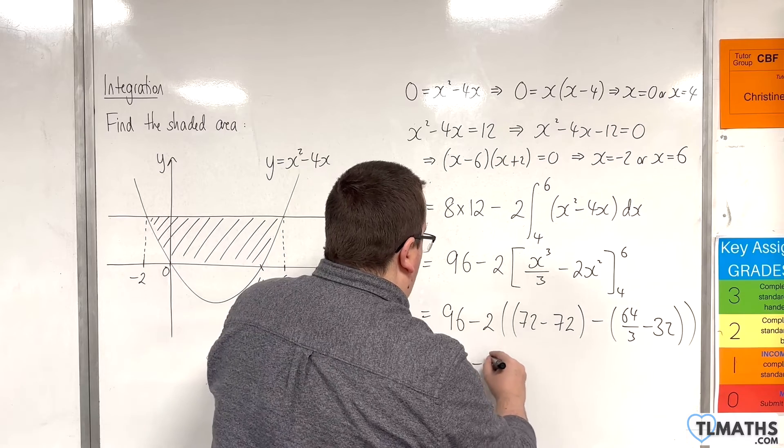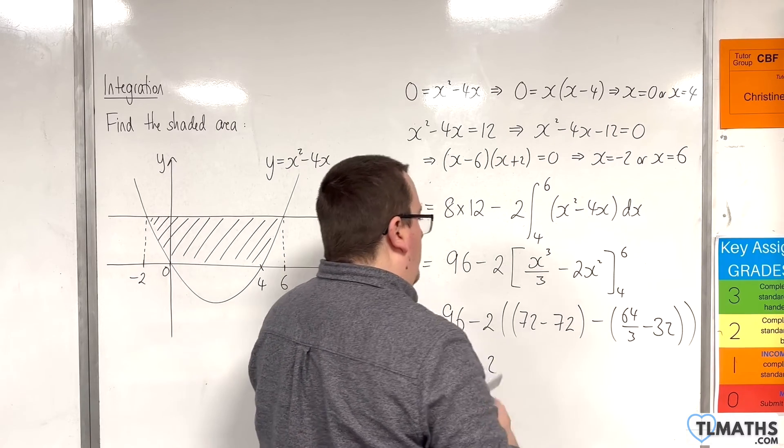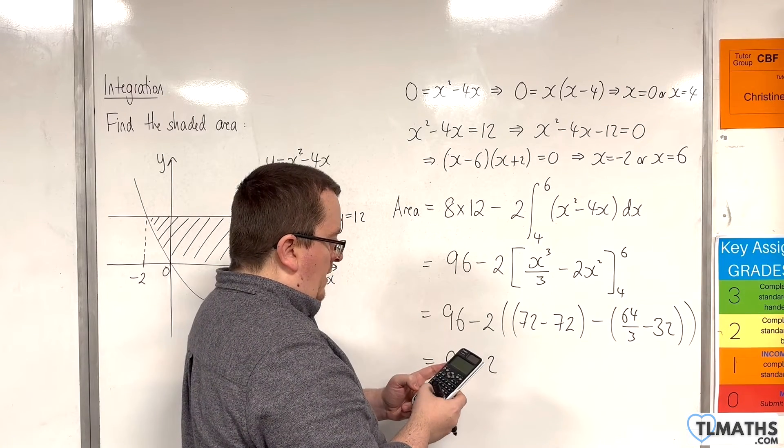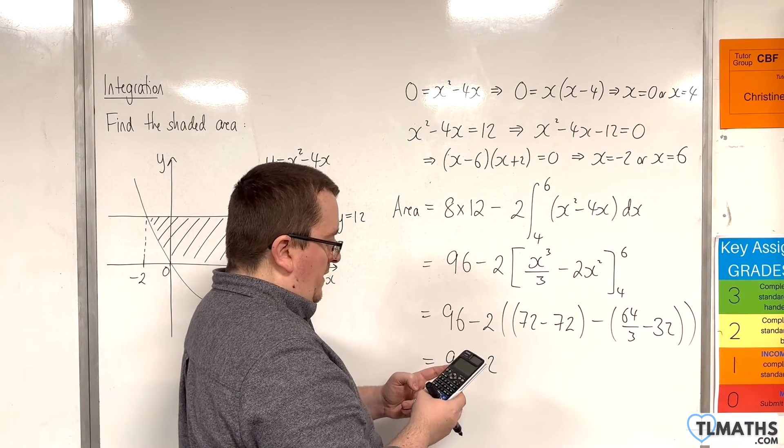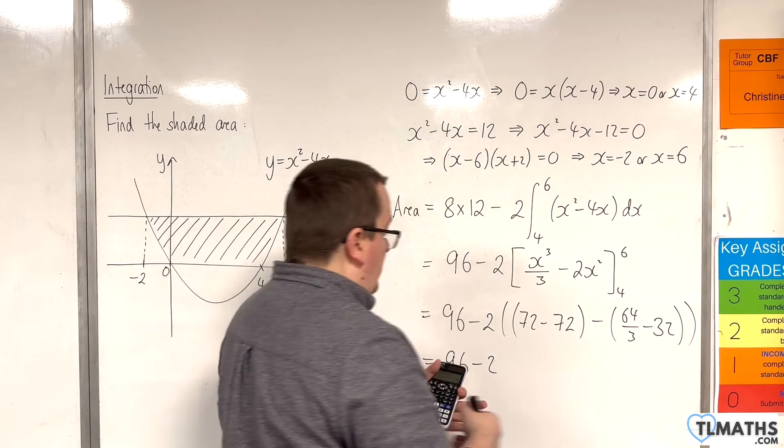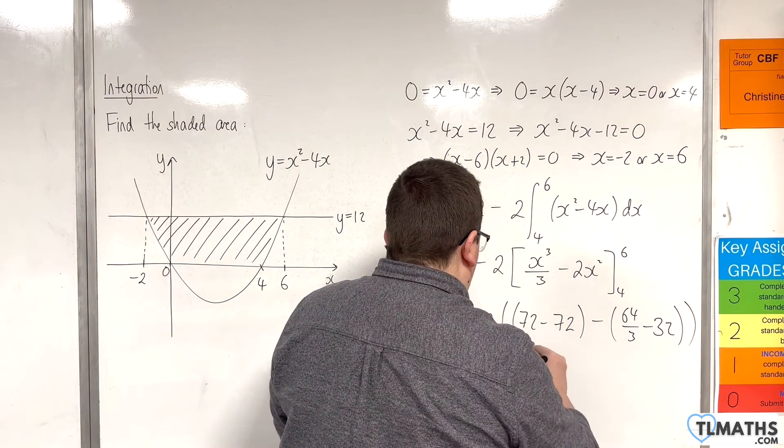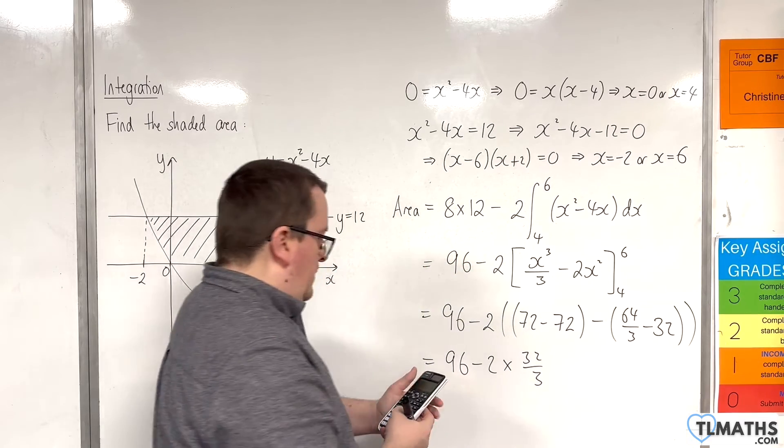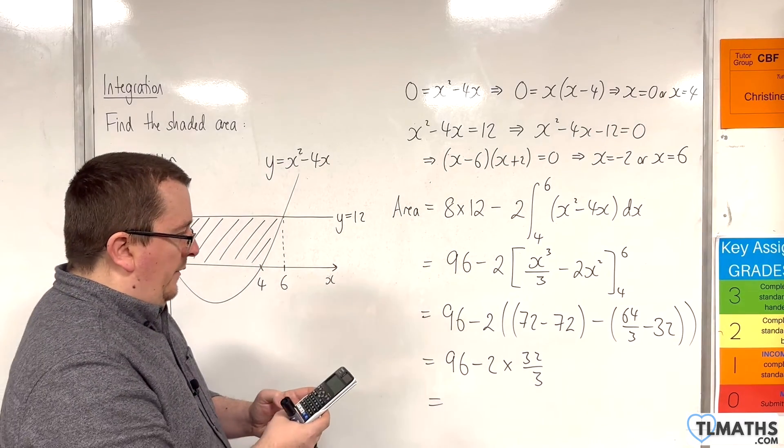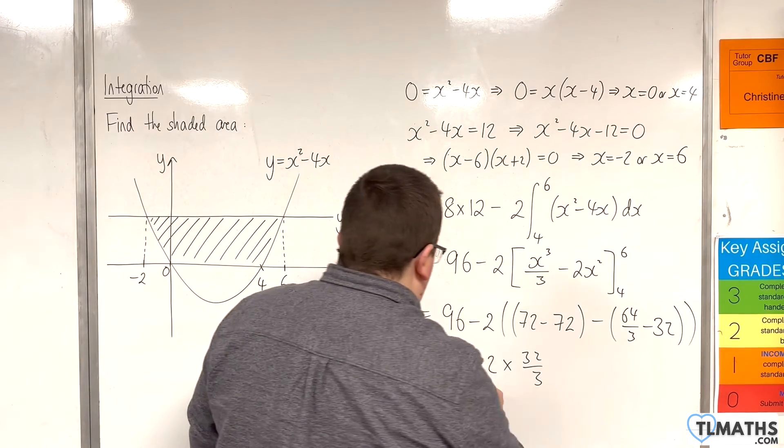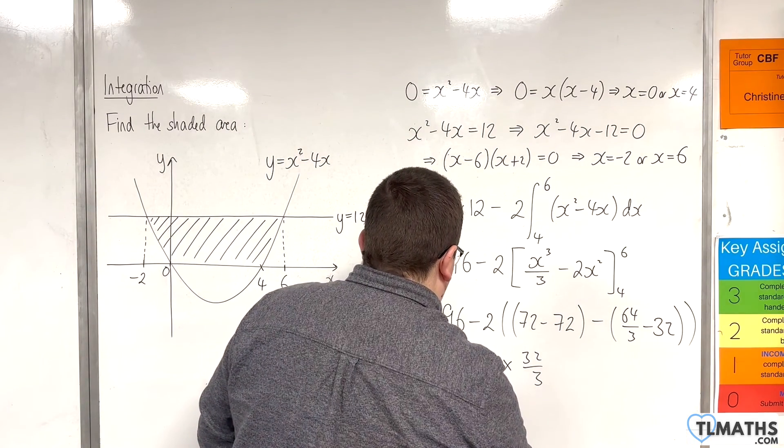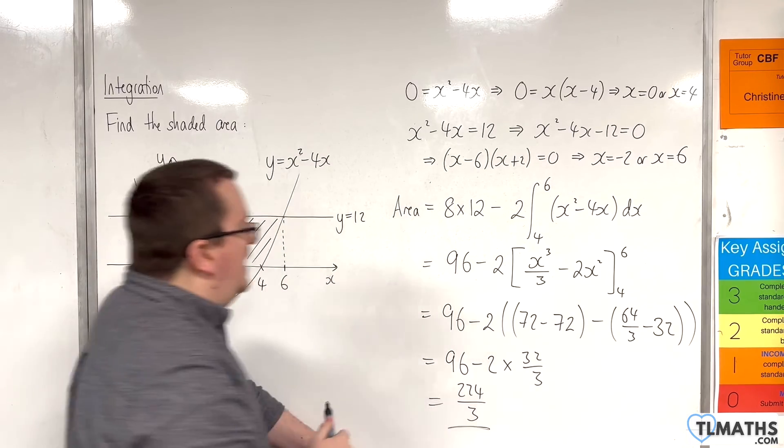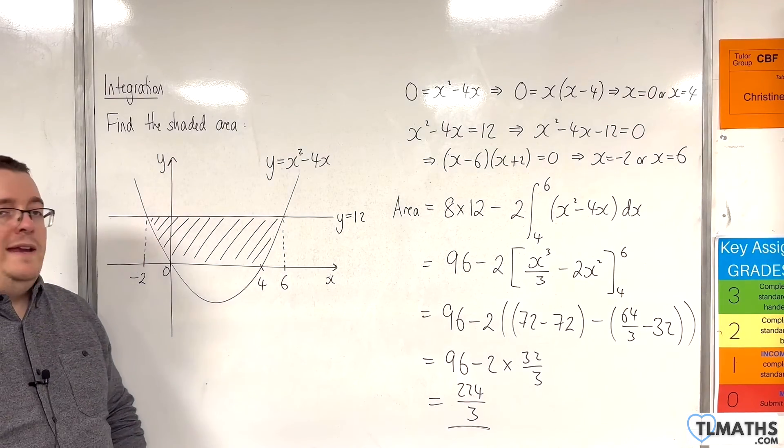So we have 96 take away two lots of, so that's 0 take away that, so 0 take away 64 over 3 take away 32, so that's 32 over 3, times by 32 over 3. So 96 take away two lots of 32 over 3 is 224 over 3. And that is the exact value of the shaded area.